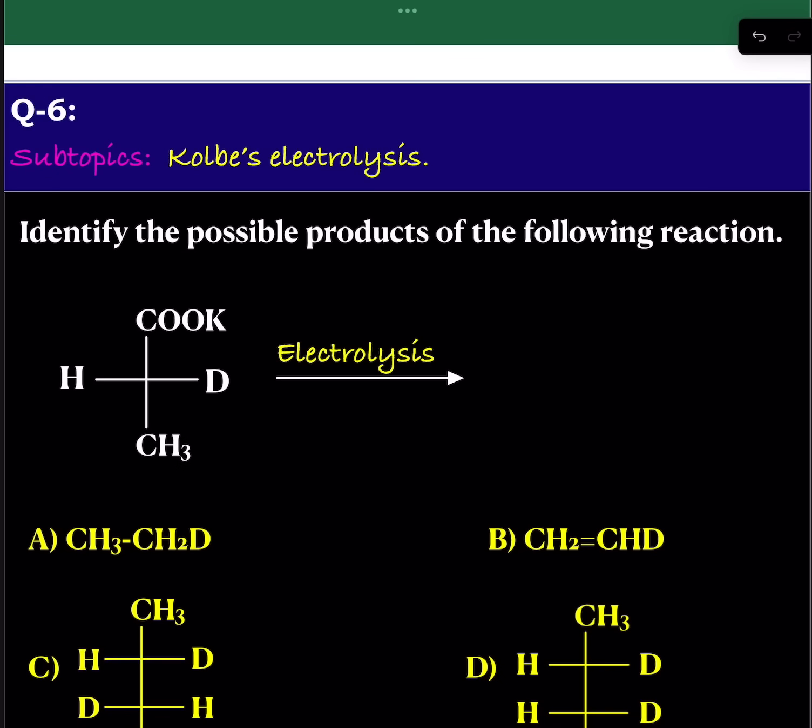Here is another question from the alkanes chapter. This question is related to Kolbe's electrolysis. And the question says, identify the possible products of the following reaction.